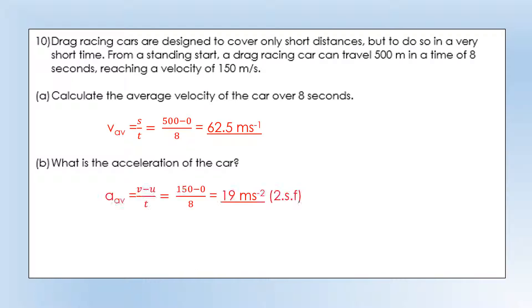What is the acceleration, the average acceleration? We can calculate using v minus u over t. We know the final velocity is 150, we know it started at 0 because it said a standing start, we know it takes 8 seconds, so we get our average acceleration, and that completes this set of solutions.